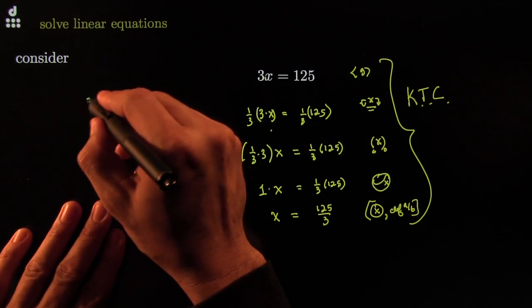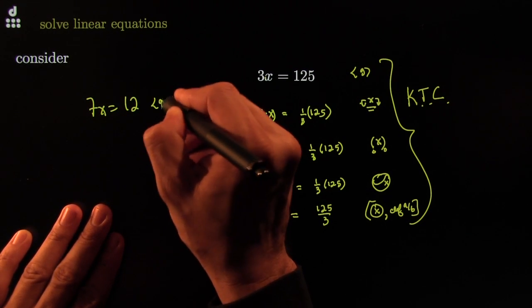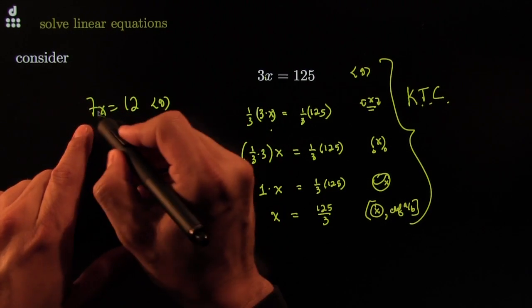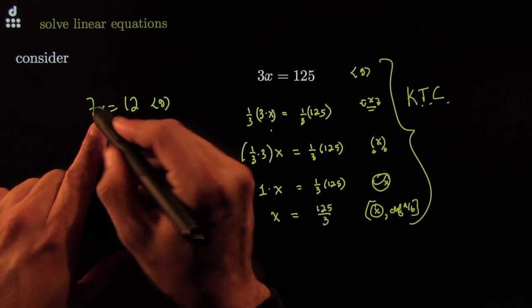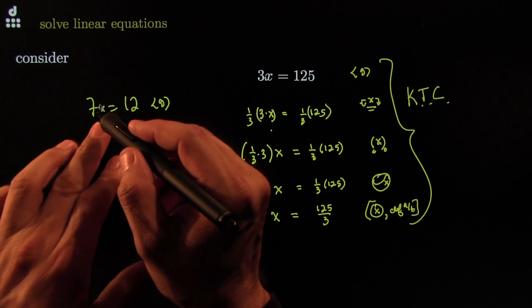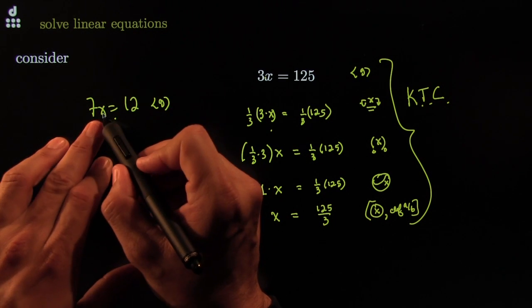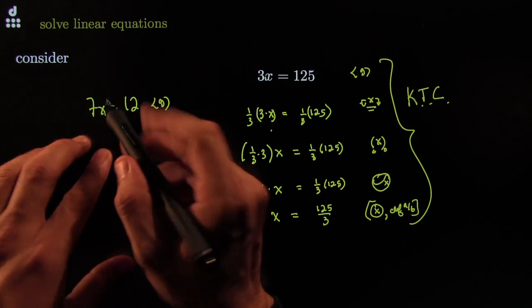It means that if I have 7x is equal to 12. Suppose that was given. I have no x's on that side. One coefficient. This is called the coefficient. The number in front of x. It's called the fancy name for it. You could call it the number in front of x. But it has a fancy name. It's called the number that's being multiplied by x. It's called the coefficient.